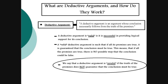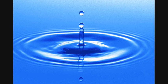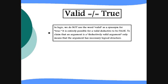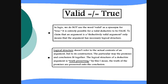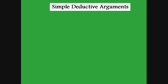This means that if all the premises are true, there is no logically possible way that the conclusion could be false. We say that a deductive argument is invalid if the truth of the premises does not guarantee that the conclusion must be true. Now, let me make it clear that in logic we do not use the word valid as a synonym for true. It is entirely possible for a valid deductive argument to be false. To claim that an argument is deductively valid only means that the argument has a deductive logical structure. Logical structure doesn't actually refer to the actual contents of an argument, but to its construction — the particular way the premises and the conclusion fit together. The logical structure of a deductive argument is always truth-preserving, meaning the truth of the premises is preserved unto the conclusion.